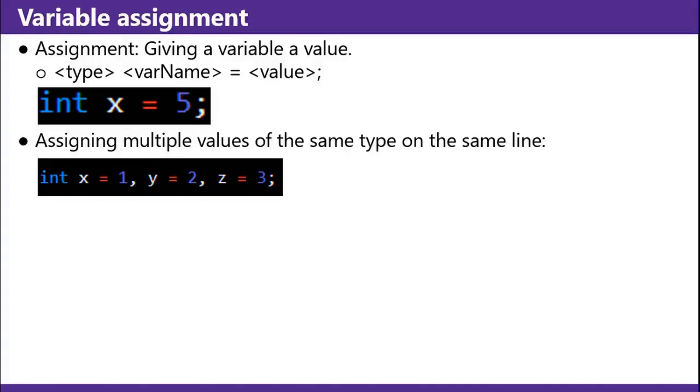Assigning multiple values of the same type on the same line can be done like the other example: int x equals 1, y equals 2, z equals 3. Now all those variables are ints.